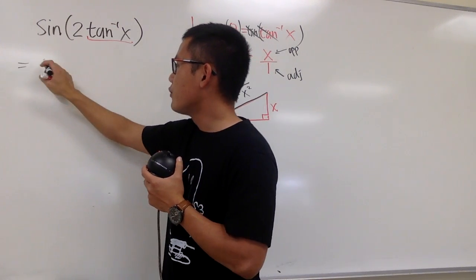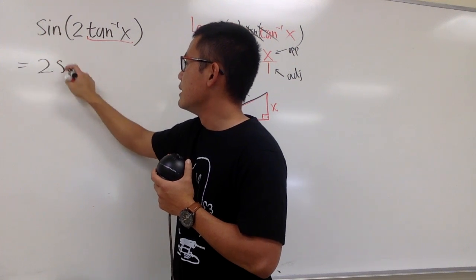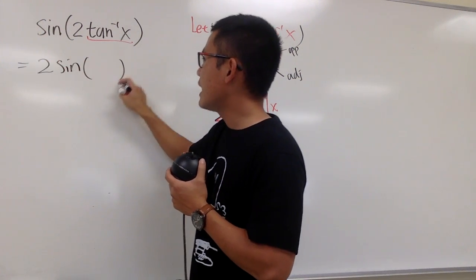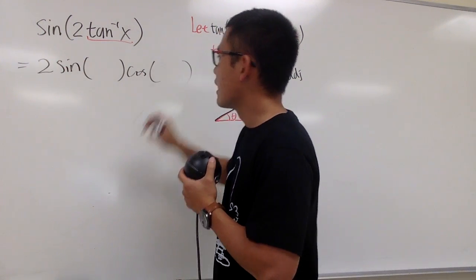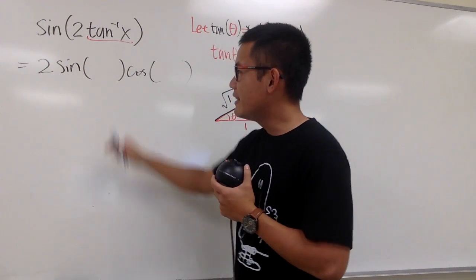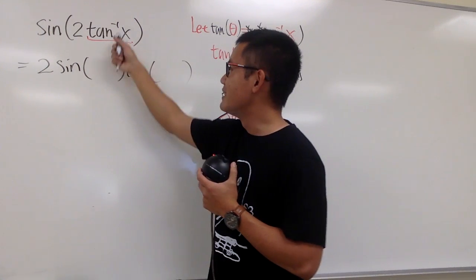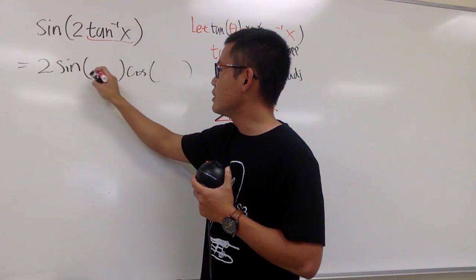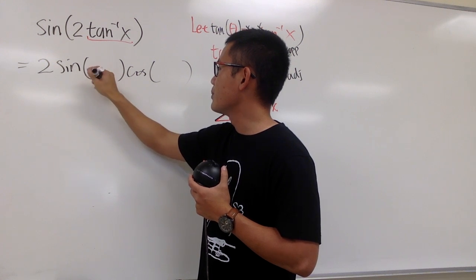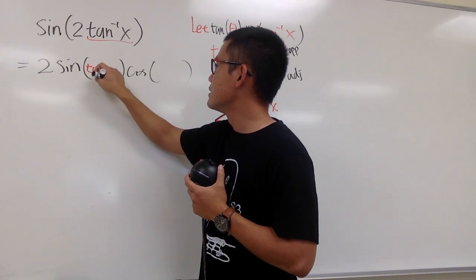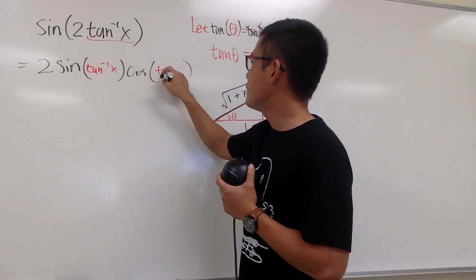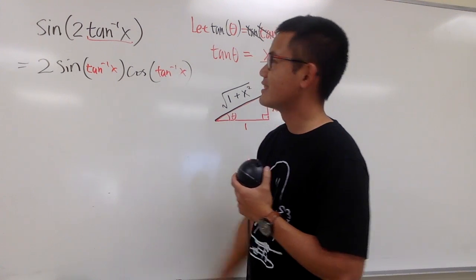This is the same as, by the double angle formula for sine, 2 sin(θ) cos(θ). And the theta in our case is the inverse tangent, so let me just put this down right here. Inverse tangent x, inverse tangent x.